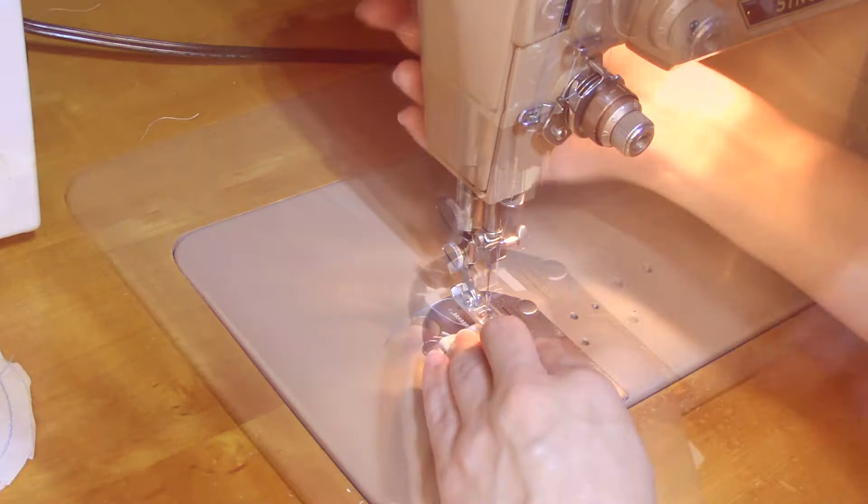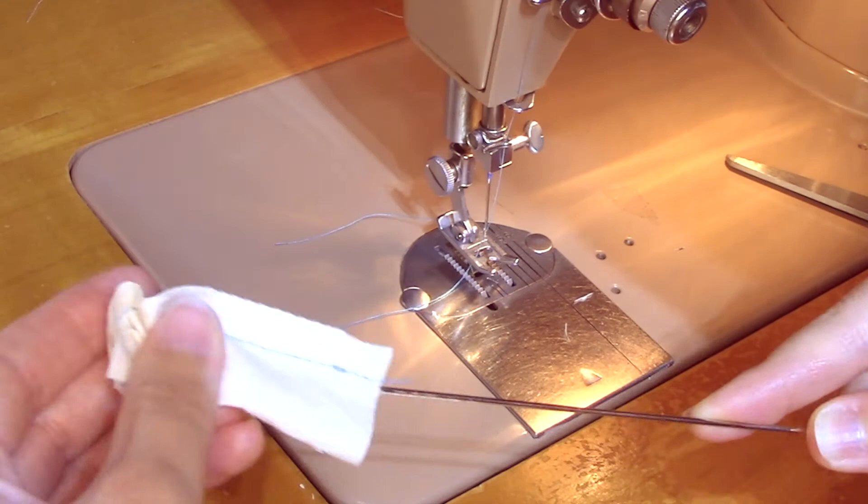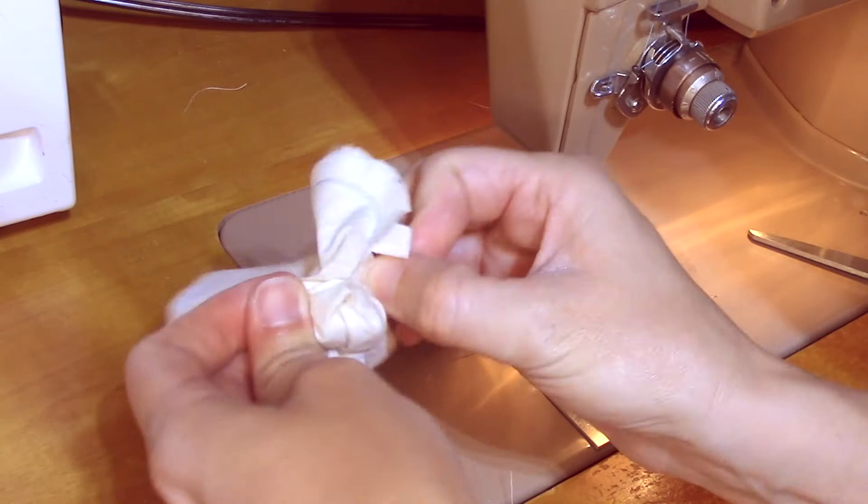Then using a safety pin or a handy tool like this loop turner, turn your centerpiece right side out. Then you can turn your bow piece right side out, pushing the corners out smoothly.